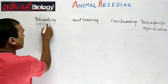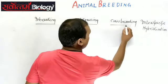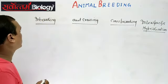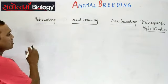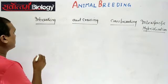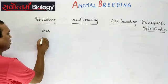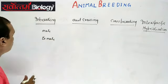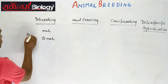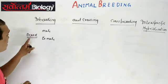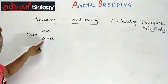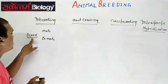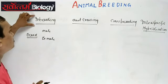Let us understand when we say inbreeding, when out-crossing, when cross-breeding, and when interspecific hybridization. When the male and female being crossed are of the same breed, and the ancestors of both are also the same — closely related ancestors — and the cross is done within the same breed, then we call it inbreeding.